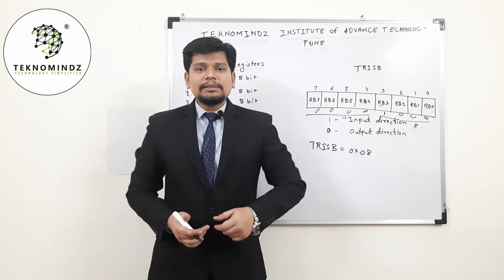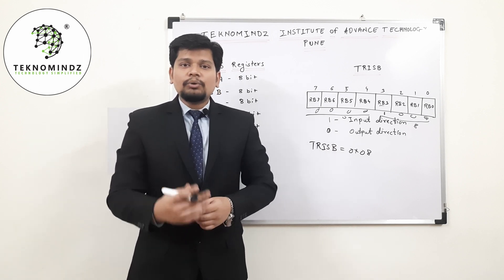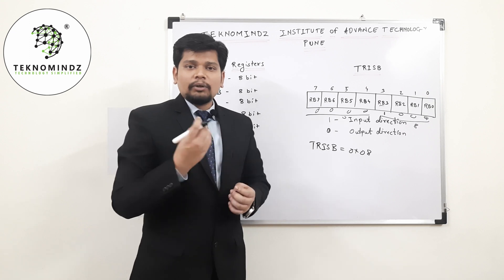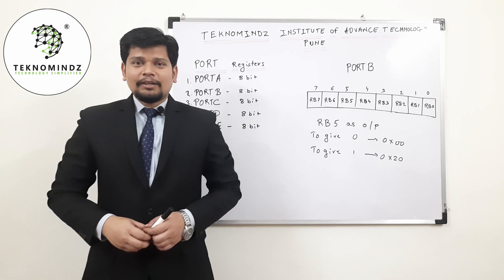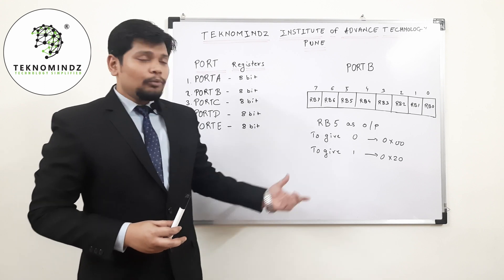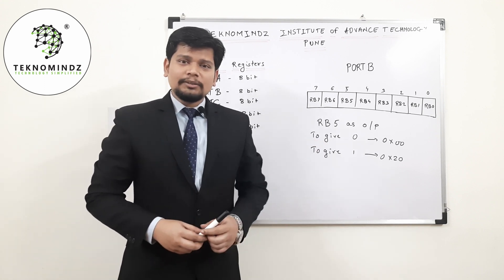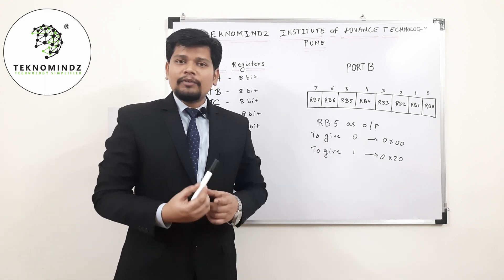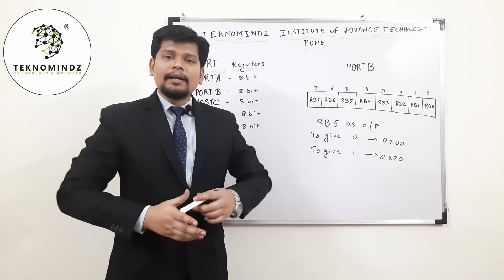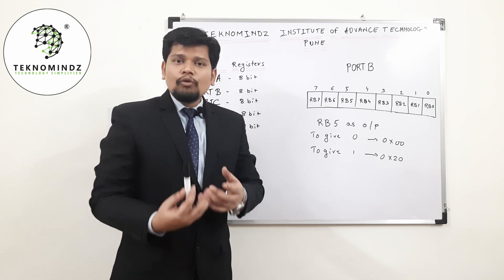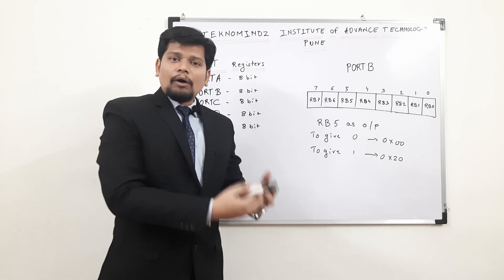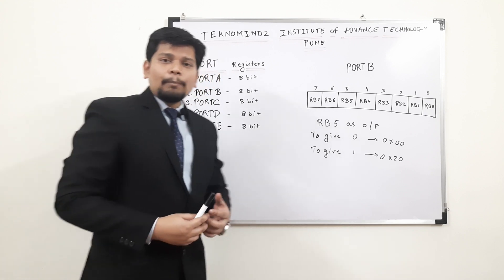Now we will see the port register, which is used to give a value or to take a value from a particular port. As we have seen the TRISB register, we move towards the port register. In the TRISB register, we gave the direction for RB3 as input and the rest of the pins as output. Now, if you need to give an output, you will use the port register.